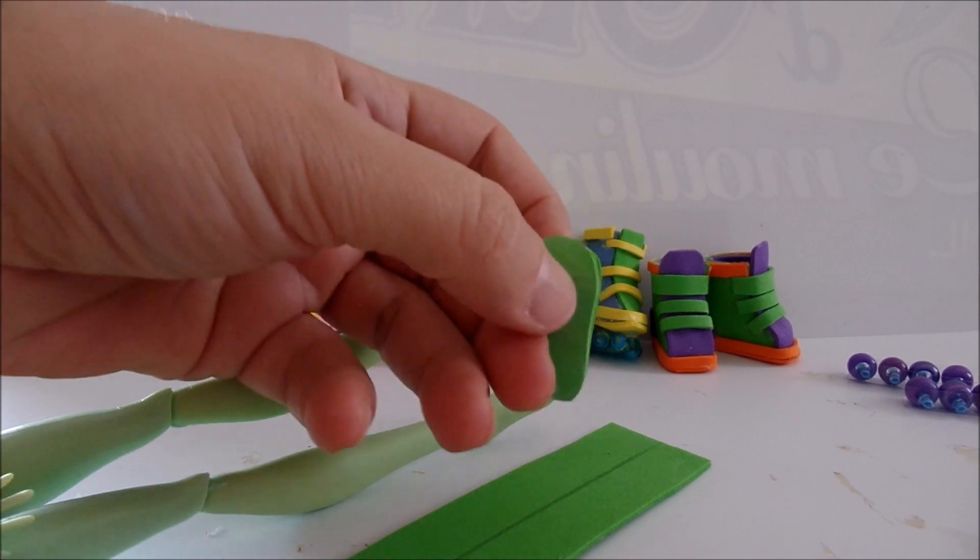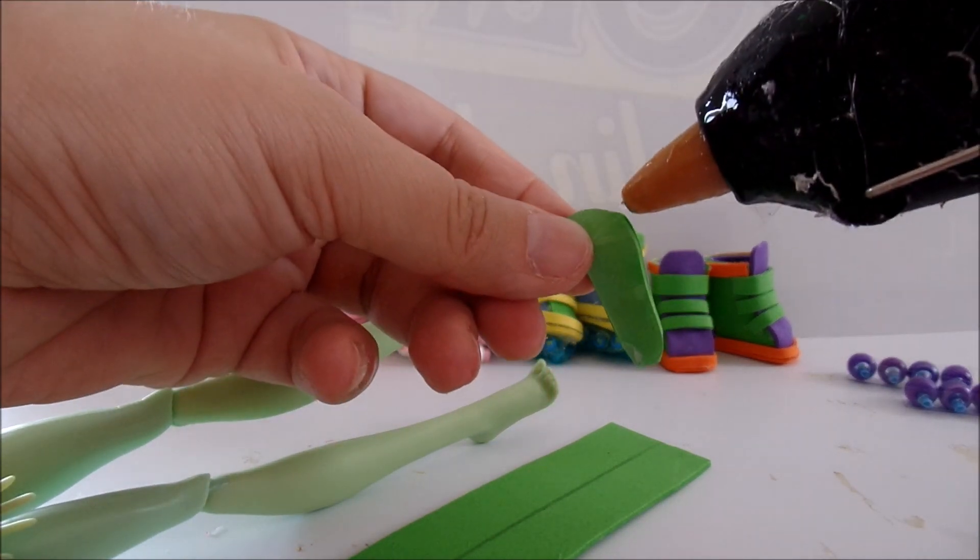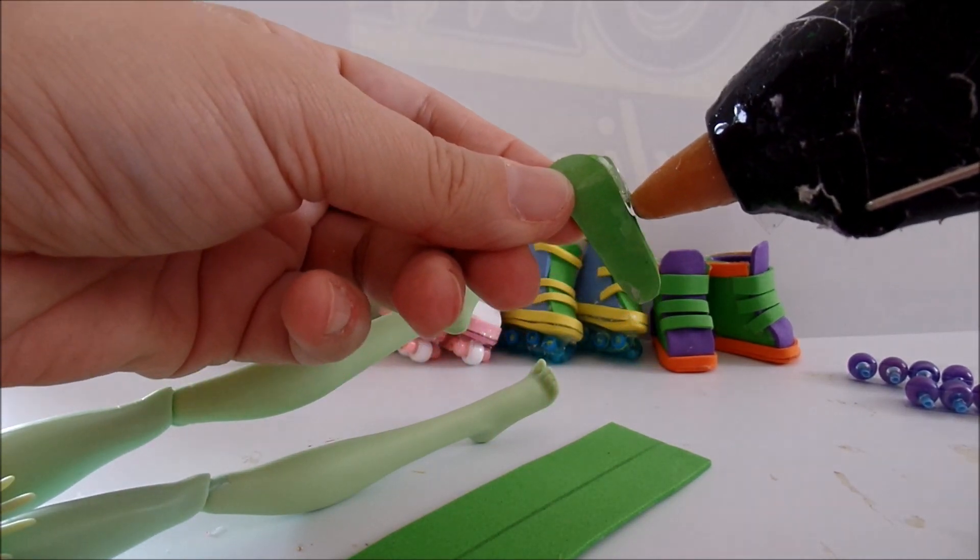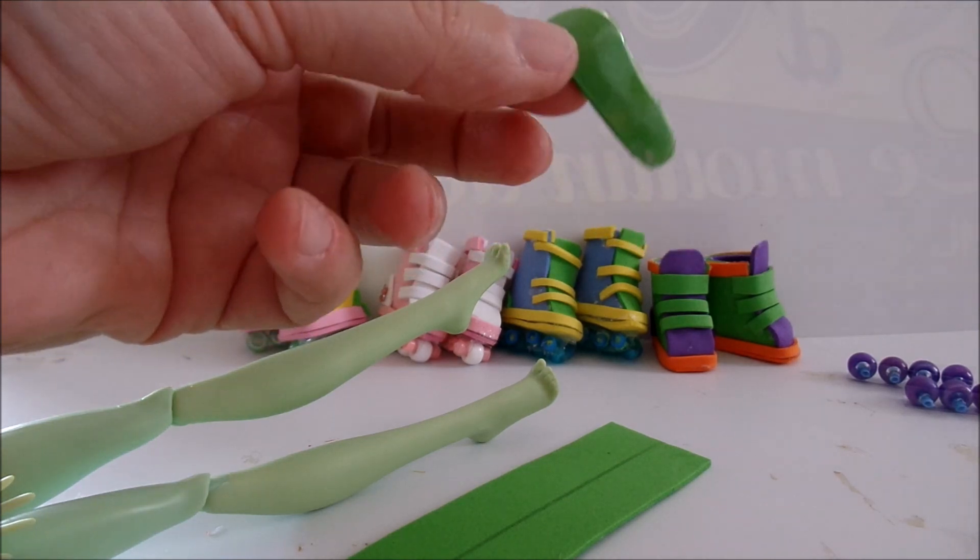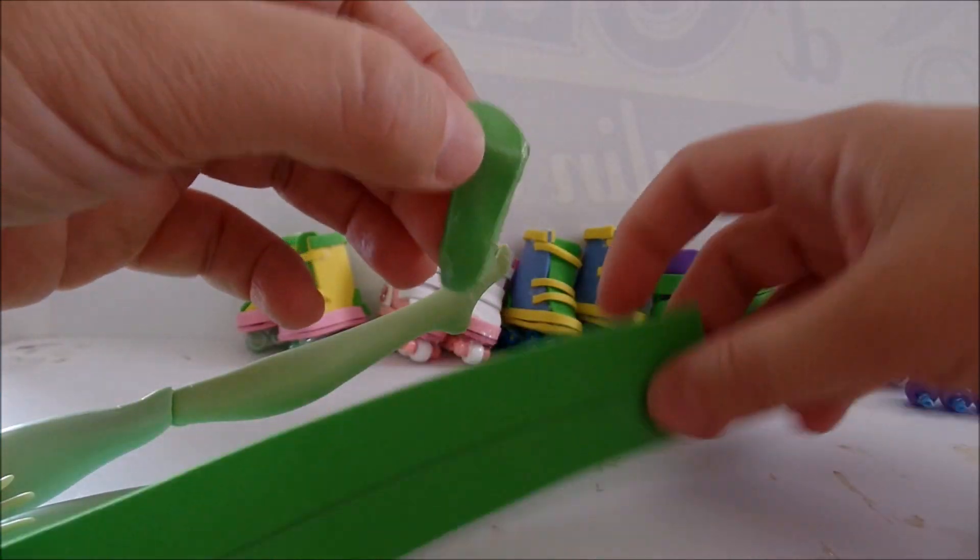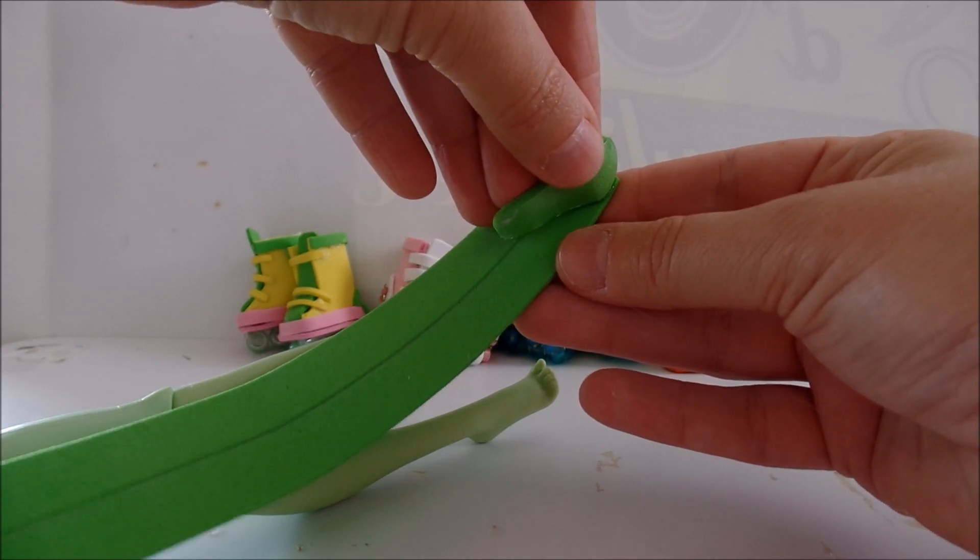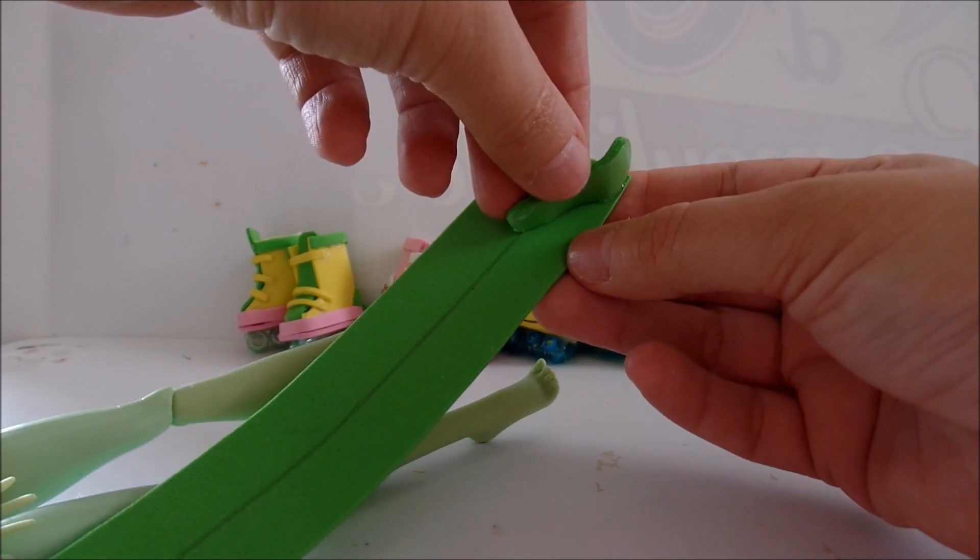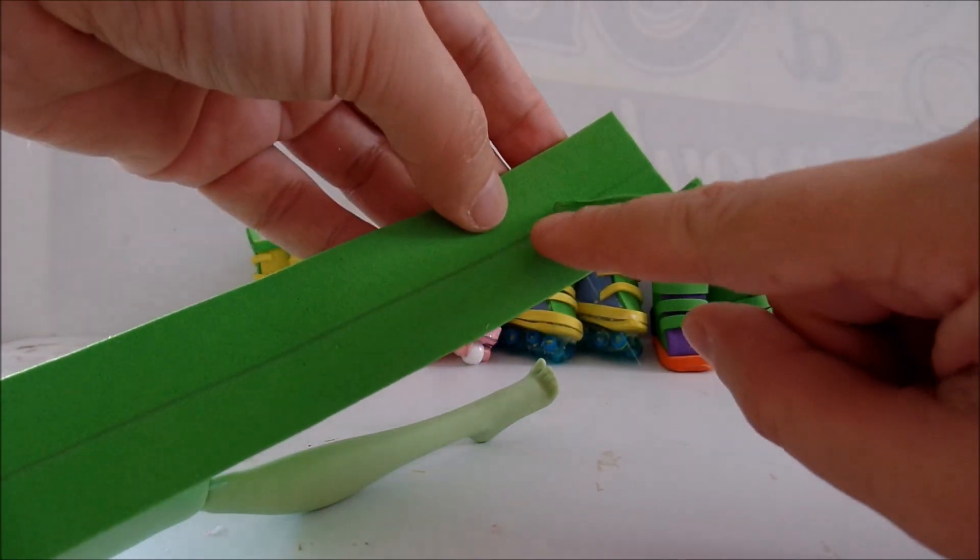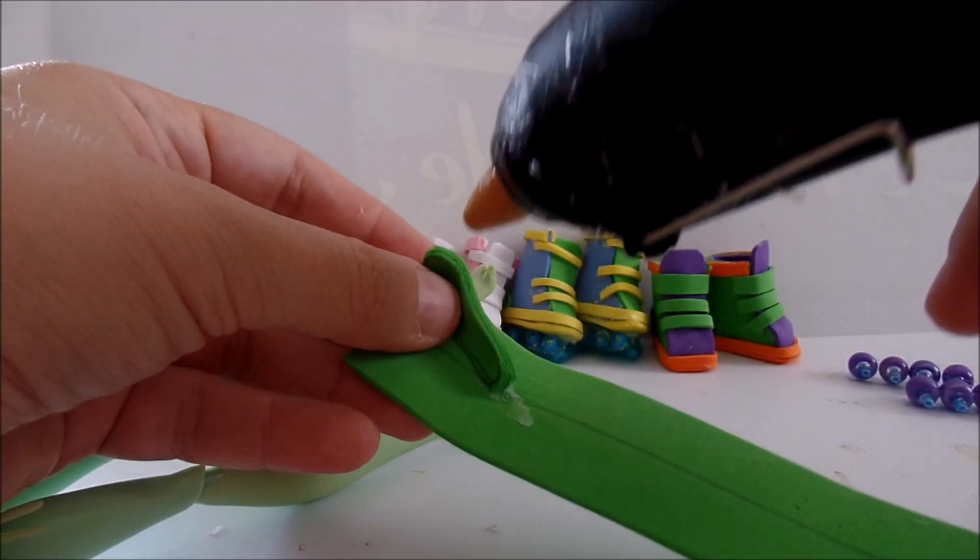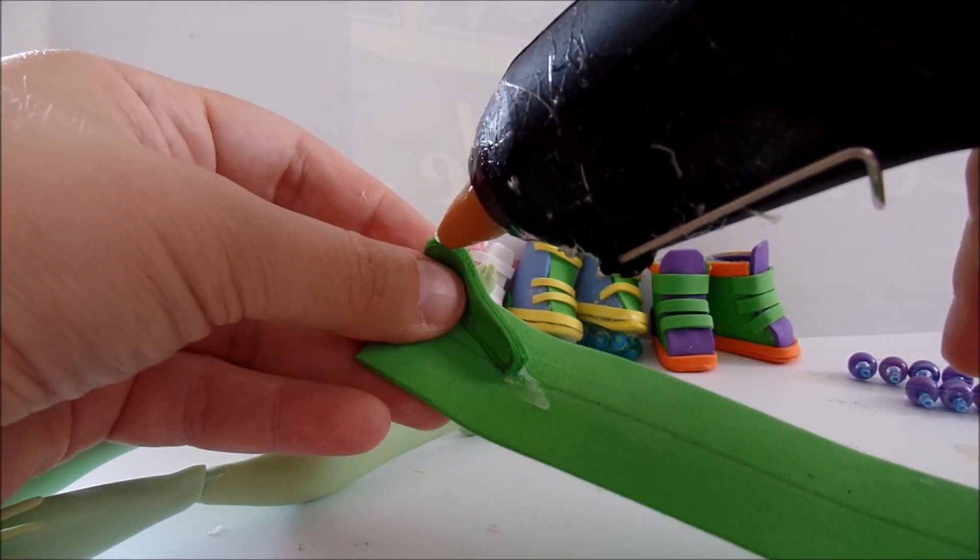Now I am taking the sole and covering with glue one of its sides. Do not cover the front part. And glue it to the line from the side under the ankle. Then glue the other side.